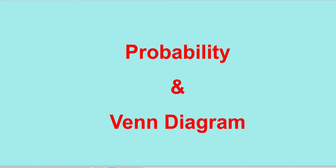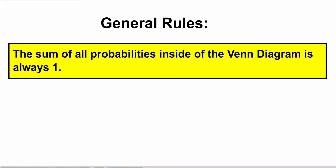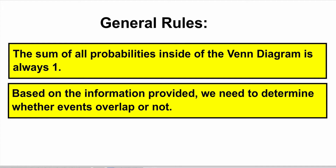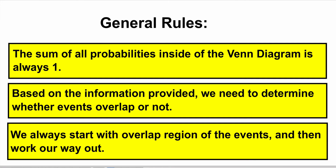Now, let's talk about probability with Venn diagrams. Some general rules: the sum of all probabilities inside of the Venn diagram is always equal to 1. Based on the information provided, we need to determine whether events overlap or not. We always start with the overlap region of the events and then work our way out.